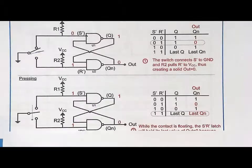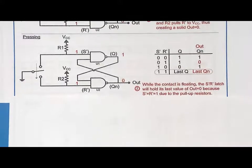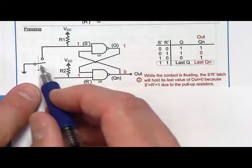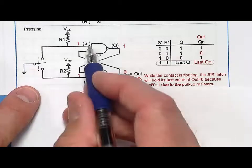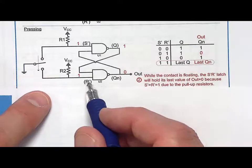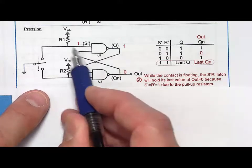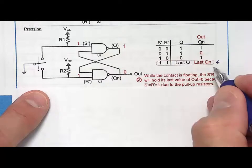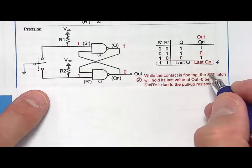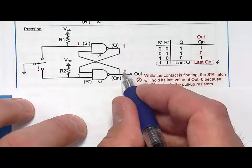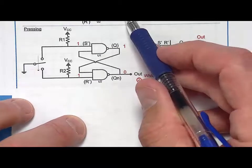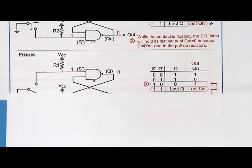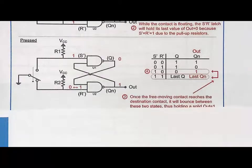Now let's look at when you press the button - you go to no man's land. Nothing is driving S-bar or R-bar except the pull-up resistors, which put S-bar to one and R-bar to one. That is the store state for an S-bar R-bar latch. This is great because it will hold the last value, which was a zero in this case, as the contact passes through the break zone.